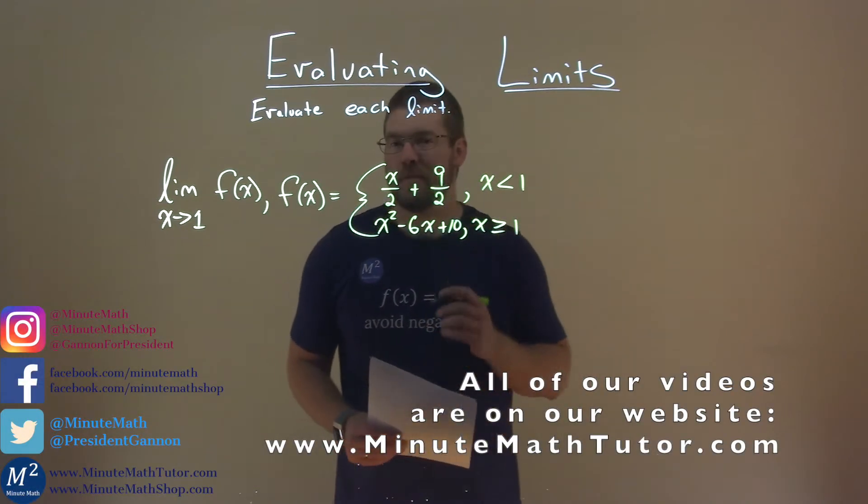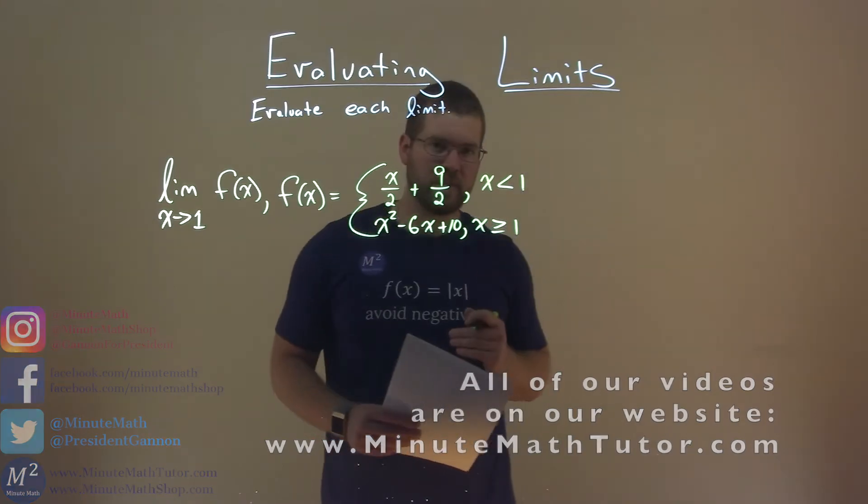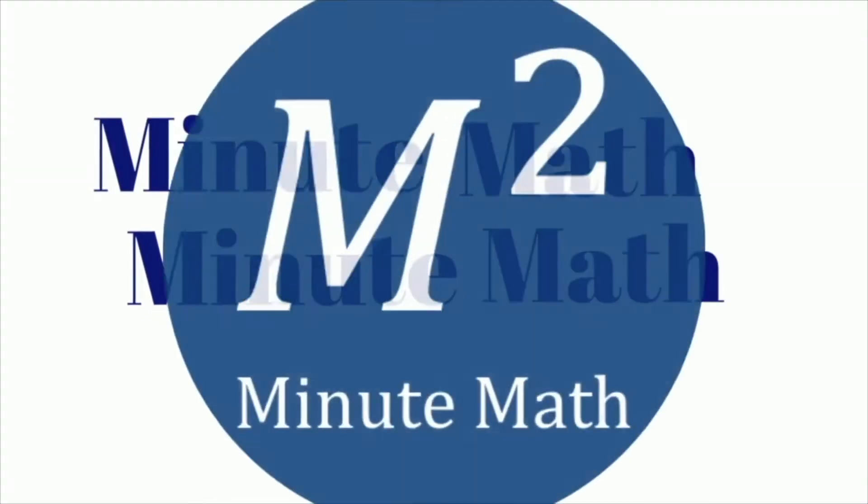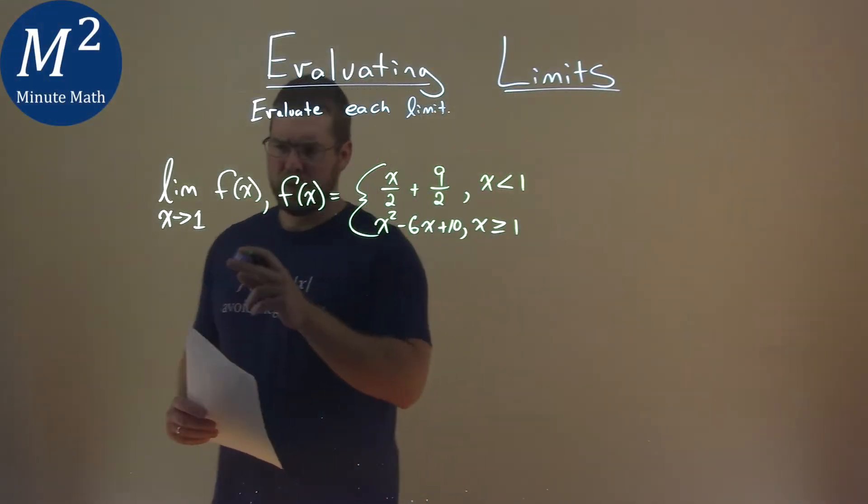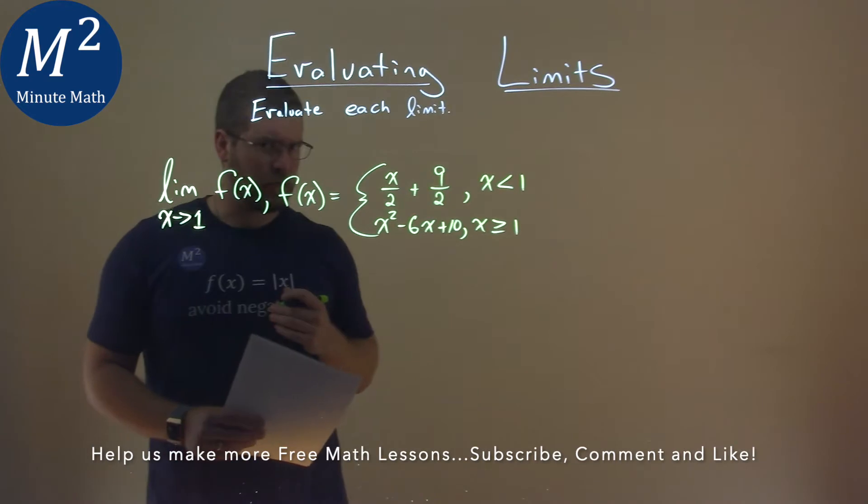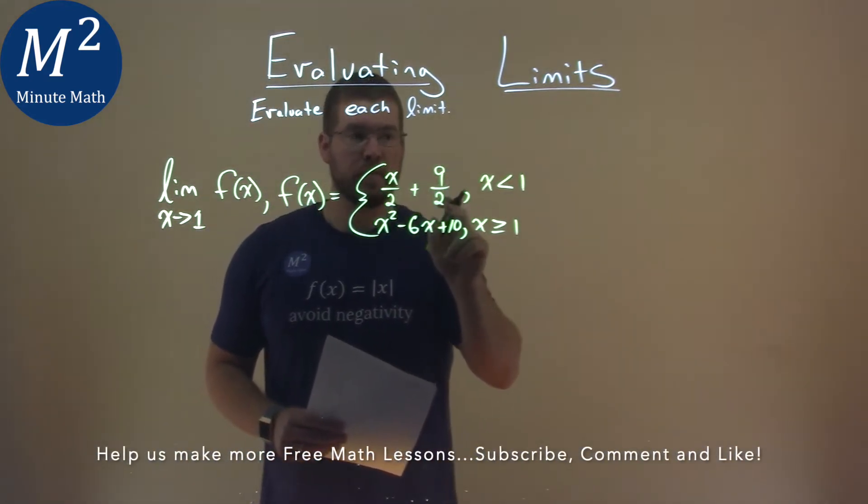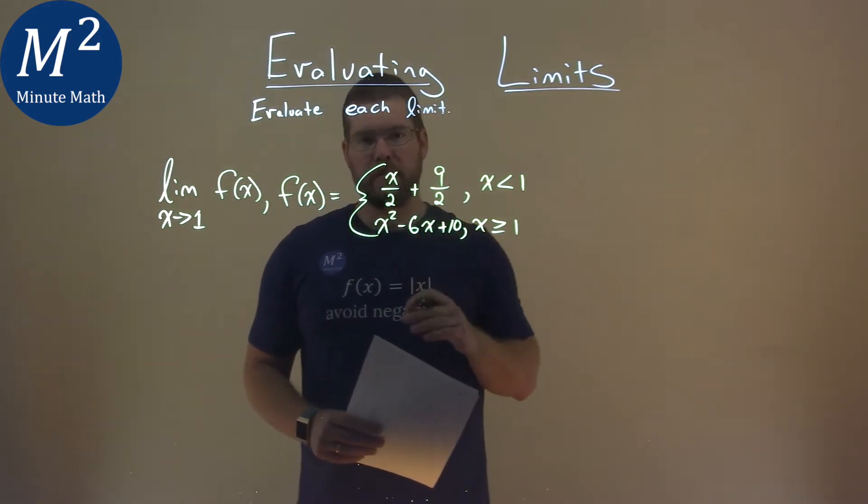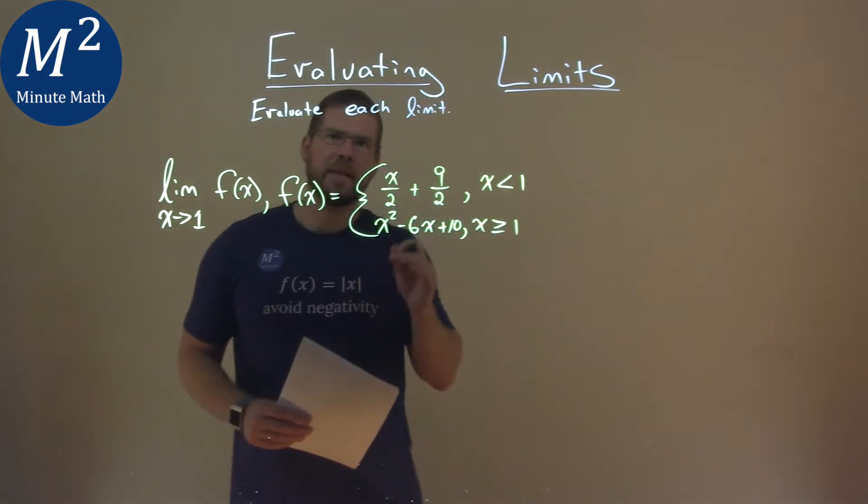Hi, I'm Sean Gannon and this is Minute Math. Today we're learning about evaluating limits. We're given this problem: the limit as x approaches 1 of f(x). f(x) is our piecewise function: x/2 + 9/2 where x is less than 1, and x² - 6x + 10 when x is greater than or equal to 1. We have to evaluate this limit.